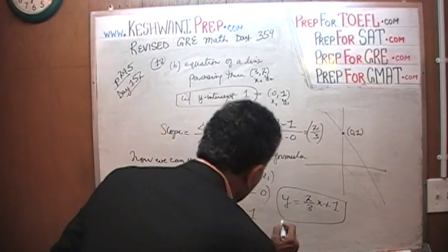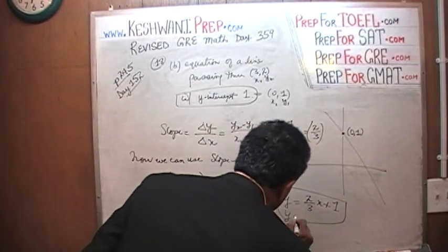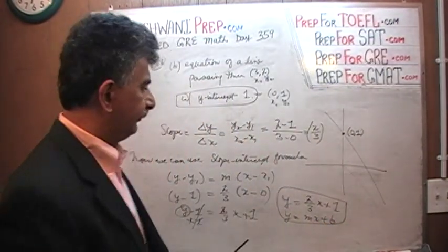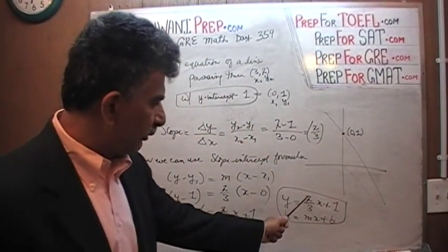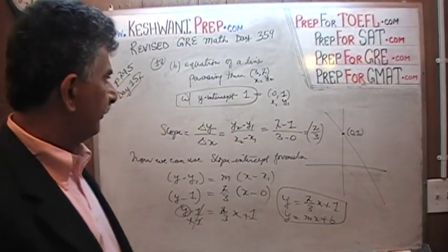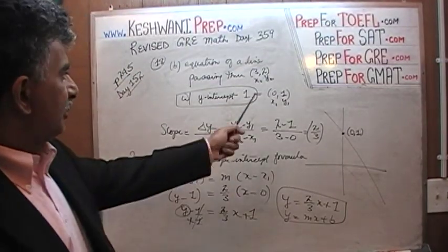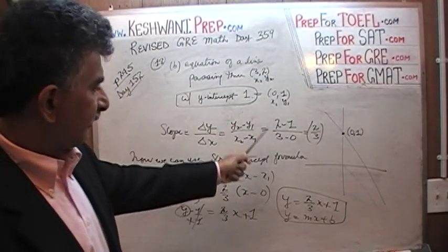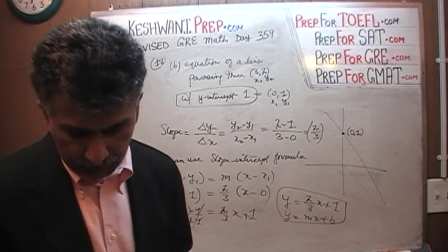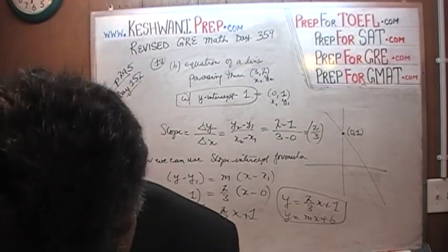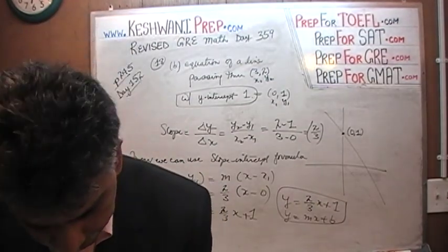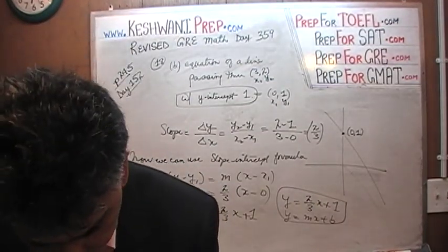So the equation of the line in slope-intercept form is Y equals 2/3 X plus 1, where M is the slope (2/3) and B is the Y-intercept (1), which we were given. Let's move on to part C.